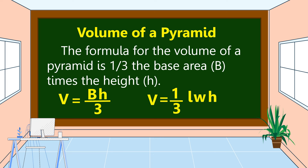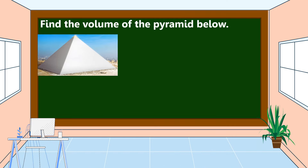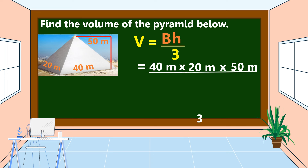The base of a pyramid is any polygon. Polygons have length and width. Find the volume of the pyramid below with a width of 20 meters, a length of 40 meters, and a height of 50 meters. To find the volume, we use the formula: V = (Area of base × height) ÷ 3. The base dimensions are 40 meters as the length, 20 meters as the width, and 50 meters as the height. We will divide all dimensions by 3.